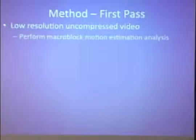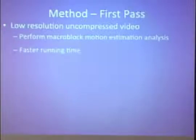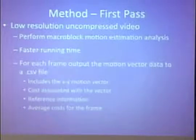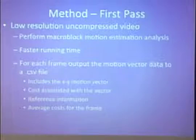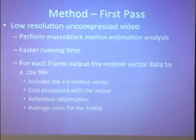The low-resolution pass takes in an uncompressed video and performs macro block motion estimation analysis. It has a pretty fast running time, and for each frame we output motion vector data to a CSV (comma-separated value) file. That includes the XY motion vector information, the cost associated with each of those vectors, information about the reference frame, and the average cost for the frame.